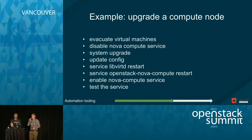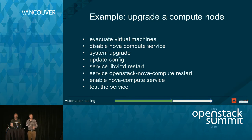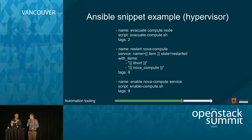Here is an example with evacuating and migrating a compute node. The high-level workflow: evacuate instances, disable nova-compute to prevent new VM scheduling on the node being upgraded, update the system, update the config, and ensure services are running — libvirt, nova-compute, networking, Ceilometer agent, etc. At the end, verify that services are actually running.